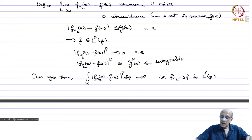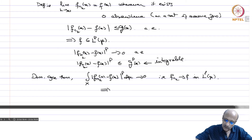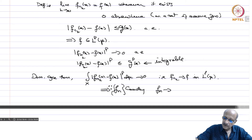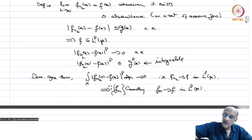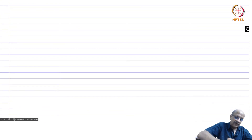We have a subsequence which converges in Lp; since f_n is Cauchy, the original sequence f_n itself converges to f in Lp. Therefore Lp(μ) is complete. That completes the case where p is strictly less than infinity.